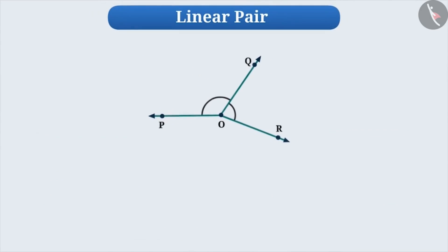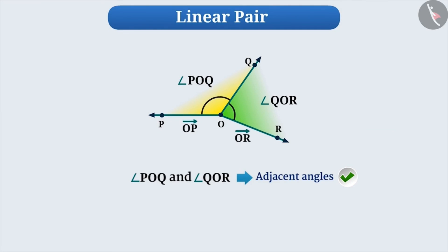If you look at angle POQ and angle QOR, both angles here are adjacent angles, but non-common sides OP and OR are not opposite rays. Therefore, we cannot call these two angles linear pair.